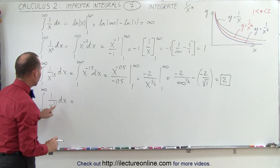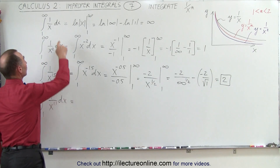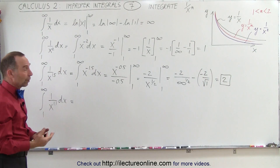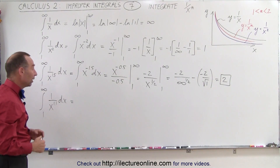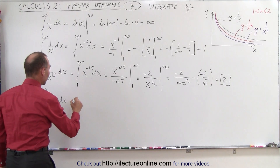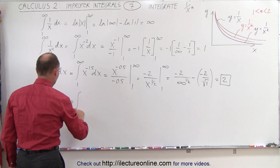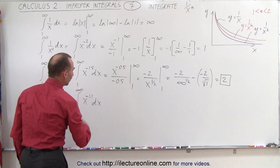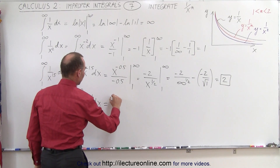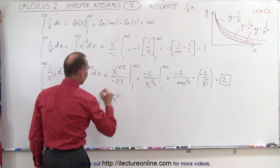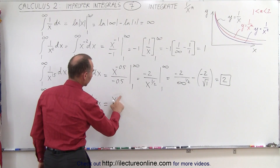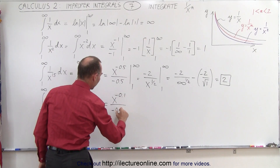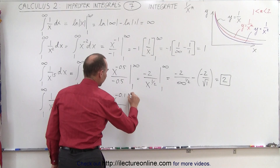What about if the exponent is 1.1? Notice that as the exponent gets closer and closer to 1, the assumption is that at some point it will no longer converge. So let's try 1.1. We rewrite x to the minus 1.1, integrate by adding 1 to the exponent, giving x to the minus 0.1 divided by minus 0.1, evaluated from 1 to infinity.